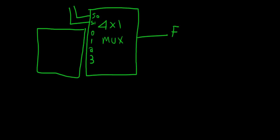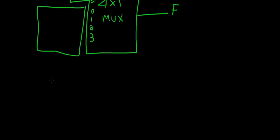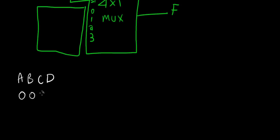Now we go on to design which inputs will be used as selection lines and how the remaining ones will be connected to the inputs. First, we draw the truth table for it. We have A, B, C, D, S as our inputs, and then we list all possible combinations.